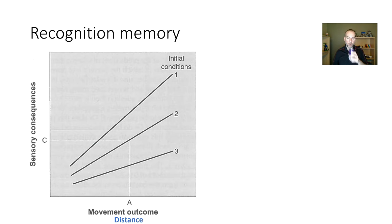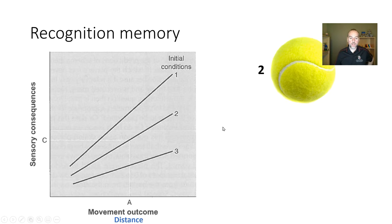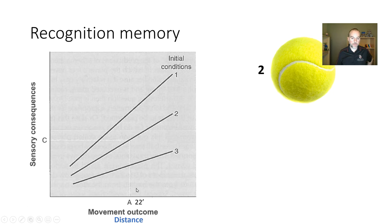Now let's look at recognition memory in the context of schema theory. Having established how recall memory works through the throwing example, recognition memory evaluates whether the movement produced the intended outcome — using the environmental results and sensory consequences we described earlier.